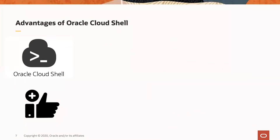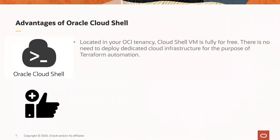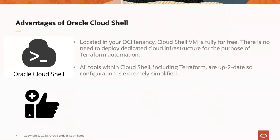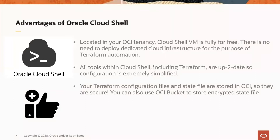What are the advantages of Oracle Cloud Shell? First of all, Cloud Shell is located in your OCI tenancy and your Cloud Shell VM is completely free. There is no need to deploy dedicated cloud infrastructure for Terraform automation. All tools within Cloud Shell, including Terraform, are up to date, so configuration is extremely simplified. Your Terraform configuration files and state files are stored in OCI, so they are secure by design. Of course, you can use an OCI bucket to store an encrypted state file. I encourage you to watch another lightning talk by my good mate Tim Clegg, where he shows best practices about Terraform, including OCI bucket usage for remote state files.